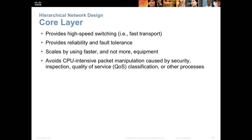At the core, we have high-speed switching. Sometimes we're back to layer two — the core could be layer three or layer two. We are simply going to be looking at speed, not really doing any filtering or control. We provide reliability and fault tolerance, buying two of everything so we can avoid any single point of failure. We also want to scale this by using really fast ports, so we typically don't buy more equipment. You see very high-end equipment with the fastest ports available, currently around 100 gigabits per second. We want to avoid any CPU-intensive packet manipulation — things like NAT, quality of service, or access control lists. We need to do all that down at the distribution layer so that the core can just move things quickly.